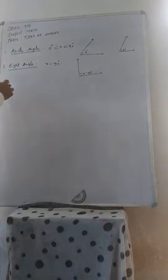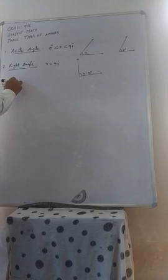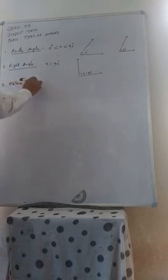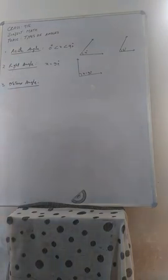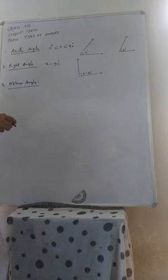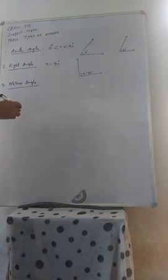Number 3, the obtuse angle. An angle whose measure is between 90 degree and 180 degree. Or we can say the angle which is greater than 90 degree and less than 180 degree is called an obtuse angle.